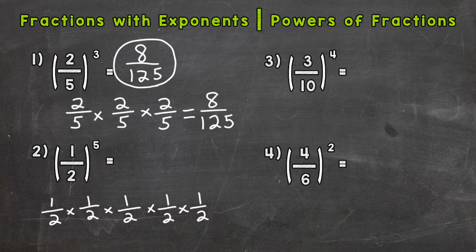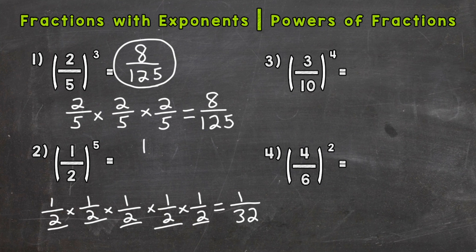Our numerator being one: one times one is one, times one is one, times one is one, times one is one. So our numerator is still one. Now for the denominators of two: two times two is four, times two is eight, times two is sixteen, times two is thirty-two. So we get one over thirty-two for one-half to the fifth power.